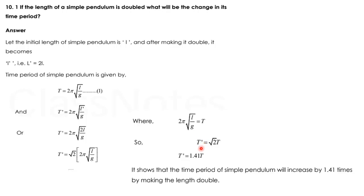And the result is T' equals √2 T. And the value of √2 you can calculate with the help of calculator. It is 1.41. So the last equation shows that the time period of simple pendulum will increase by 1.41 times by making the length double.